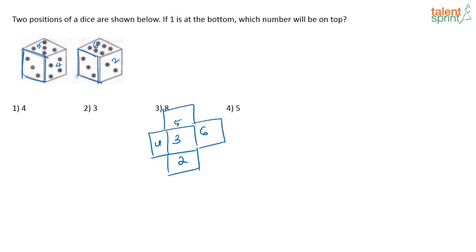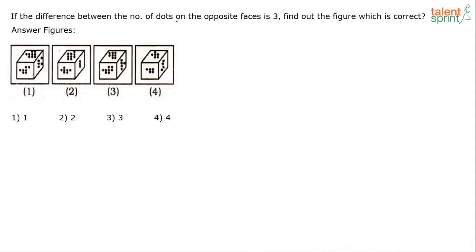The face opposite to 3 has to be face 1. If you open the dice, face 1 goes to the bottom of face 3. Now the question says if 1 is at the bottom, which number is on top? 3 has to be on top. The adjacent faces of face 3 are 2, 4, 5, and 6, so the only face opposite to 3 is 1. The answer is option 2, that is 3.